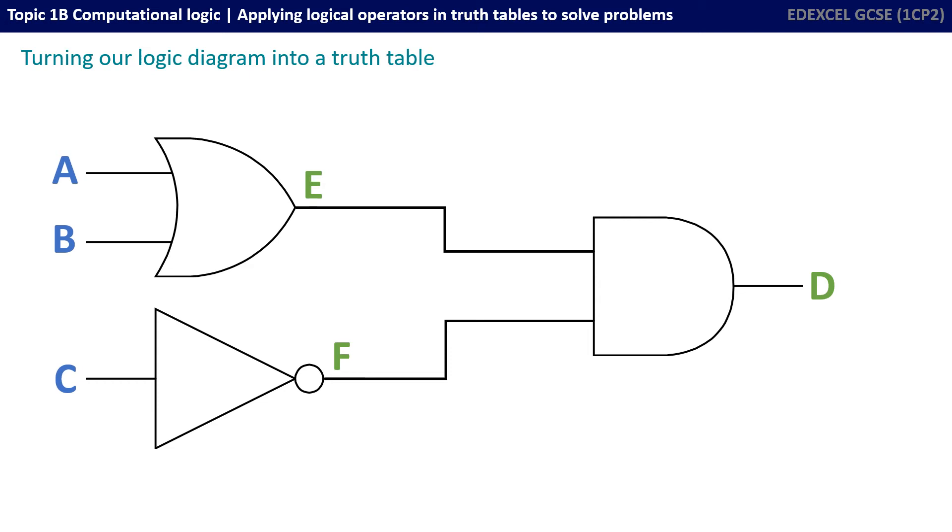I've got three initial inputs, A, B and C, and I've got one output at the very end, D, but I've also got two intermediate outputs. I've got the output from the OR gate and the output from the NOT gate. So, I've labelled them E and F.